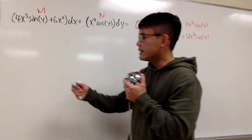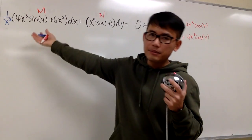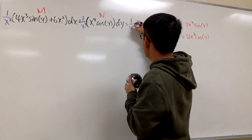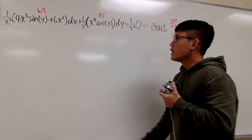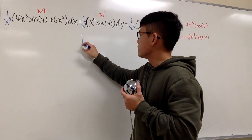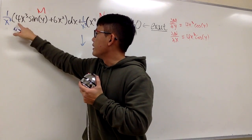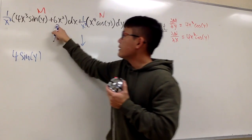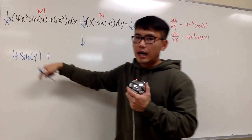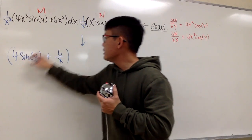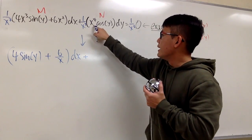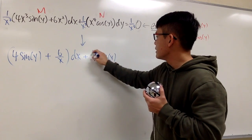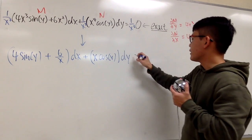Let me write it down as multiplying by 1 over x³, which is the same as dividing everything by x³. We should also do it on the right-hand side, but that would be zero anyway. So this gives us another equation. The x³ terms cancel, and we end up with 4 sine y plus 6 over x, times dx, added with x cosine y dy, still equal to zero.